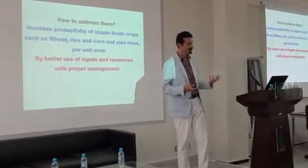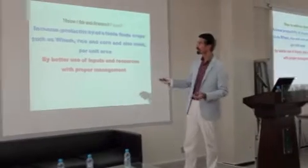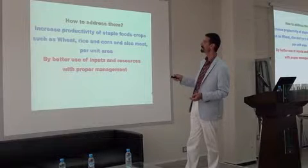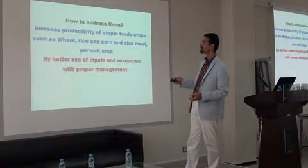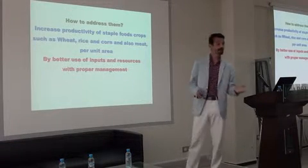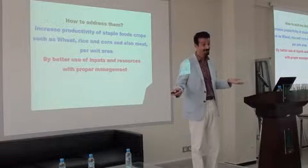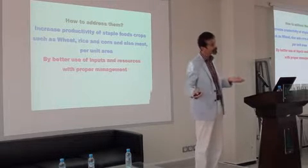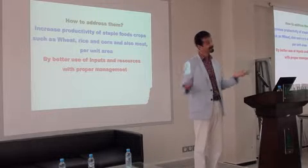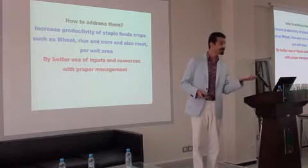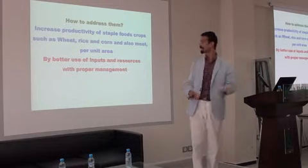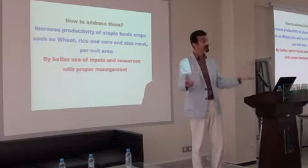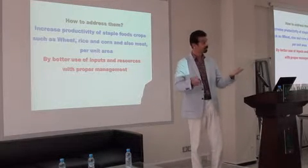As a scientist of agriculture, increasing productivity of staple food crops such as wheat, rice, corn, and also meat per unit area is critical. Because there is no more area to add — we did a lot of deforestation, we cut jungles, we destroyed the rangelands. And there is not that much more land to be increased to feed the world.